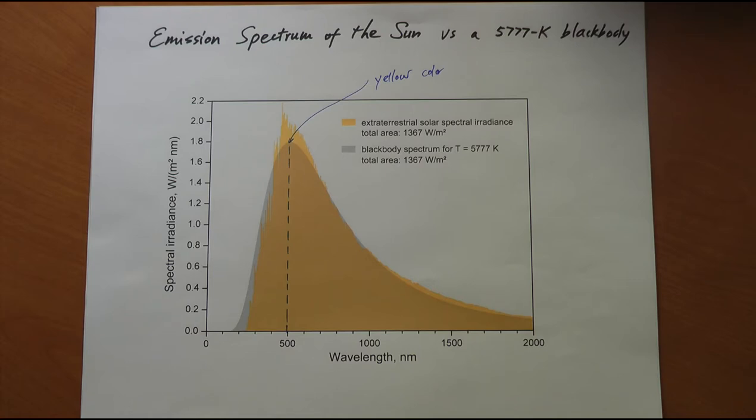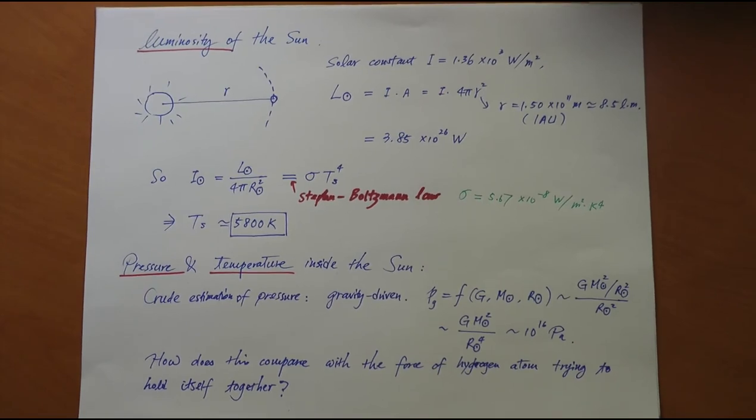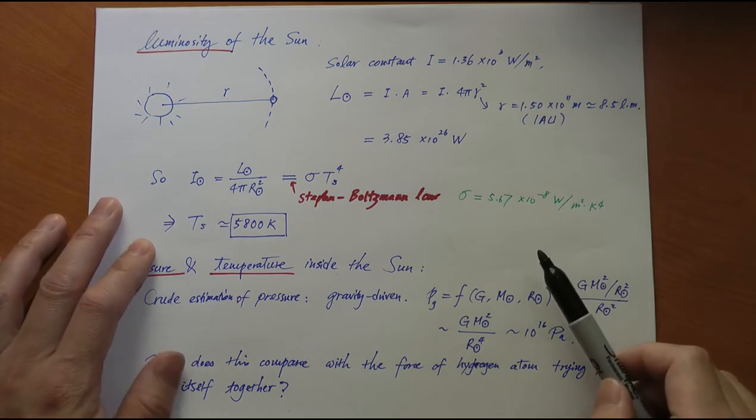If we assume the sun can be approximated as a black body on its surface at this temperature, and we know the size of the sun, the radius, we can then calculate the luminosity of the sun to see if it matches the prediction of the black body at that temperature. The luminosity can be measured experimentally.